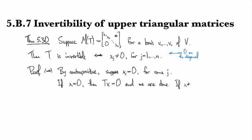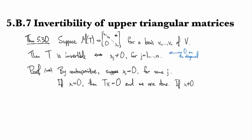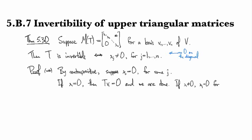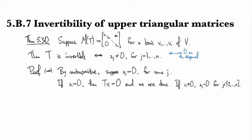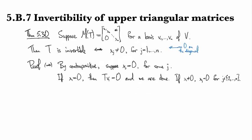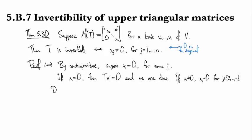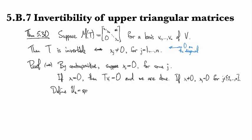Otherwise, we have lambda_j equal to zero for some larger value of j. Let's define U_k to be the span of the vectors up to the kth.